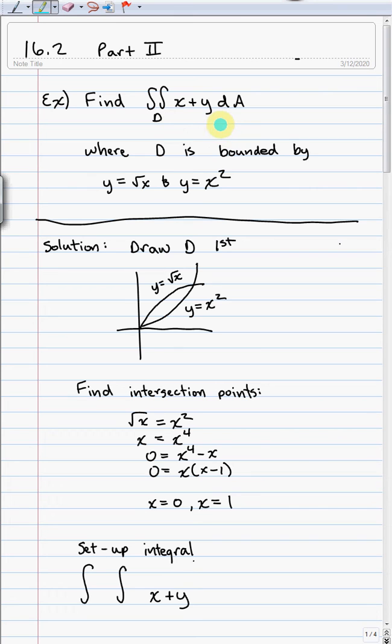Alright, so let's take a look at an example. We're going to find the double integral over some domain D of just a pretty easy function, x plus y dA, where D is bounded by y is equal to the square root of x, and y is equal to x squared. So the first thing that I want to do is just draw this region to get a sense of what we're looking at.